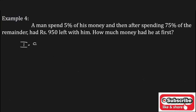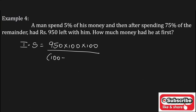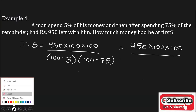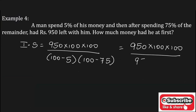The initial salary equals P, which is 950, into 100 into 100, upon (100 minus 5) into (100 minus 75). Solving this: 950 × 100 × 100 upon 95 × 25. After solving this fraction, you get the answer Rs. 4000. This is the amount the man had at first.